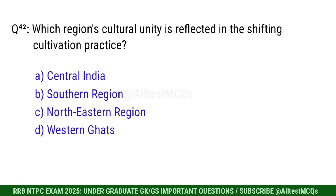Q42. Which region's cultural unity is reflected in the shifting cultivation practice? Correct option is C. Northeastern region.